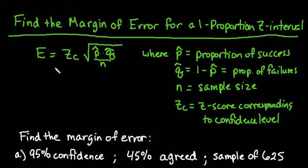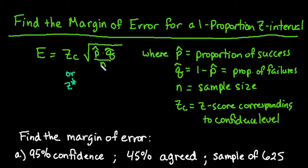The formula for finding the margin of error is E equals z_c — this could be z-star in some textbooks, as different textbooks use different notation. You take your z-score for your level of confidence times the square root of p-hat times q-hat divided by your sample size n. All of p-hat times q-hat divided by n must be contained underneath the square root, including the n.